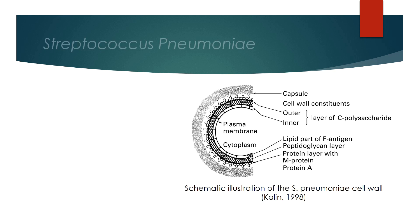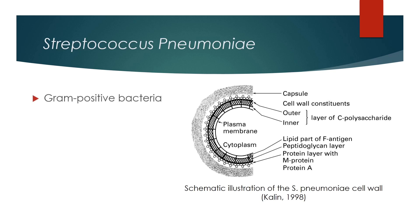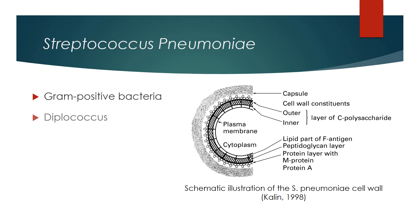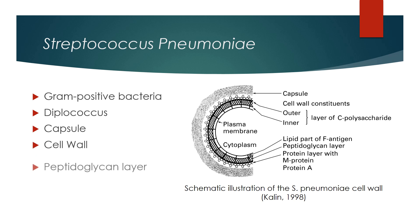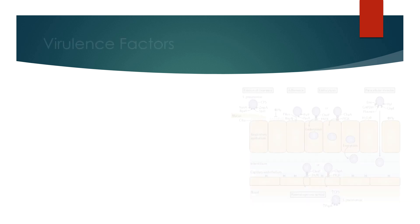It is a gram-positive bacteria that grows in long chains due to its diplococcus property. The capsule protects from neutrophils. The peptidoglycan layer is sandwiched between the inner and outer cell wall and contains many choline-binding proteins.